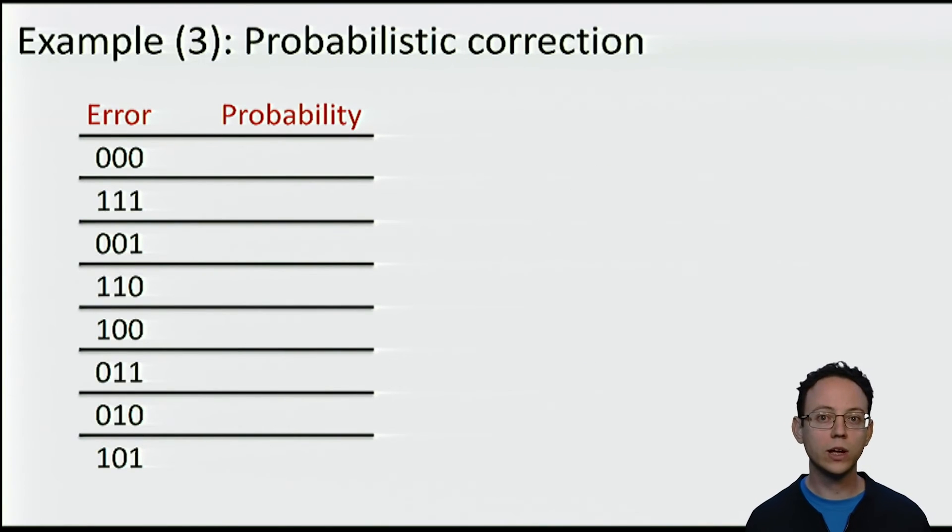So, this is great. We have a method that can correct up to one error, but how does it behave in real life? Earlier, we said that a good model is the binary symmetric channel. That is, to suppose that each bit is prone to suffer an error independently of the other bits and with the same probability p. Then, for our 3-bit words, we can say that the probability that there are no errors is (1-p) cubed. The probability that there are 3 errors is the probability that the 3 bits flip, which is p cubed. And we can easily complete the rest of the table.